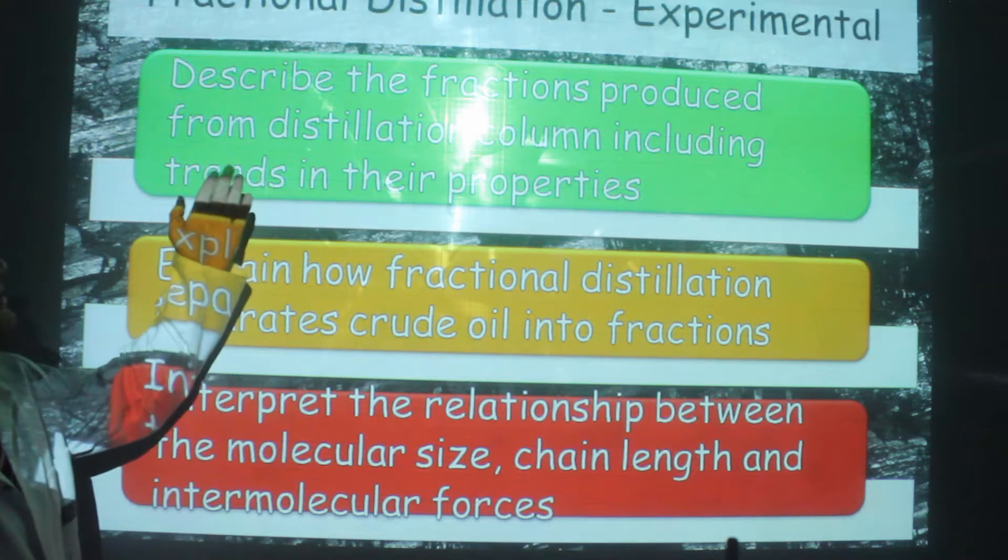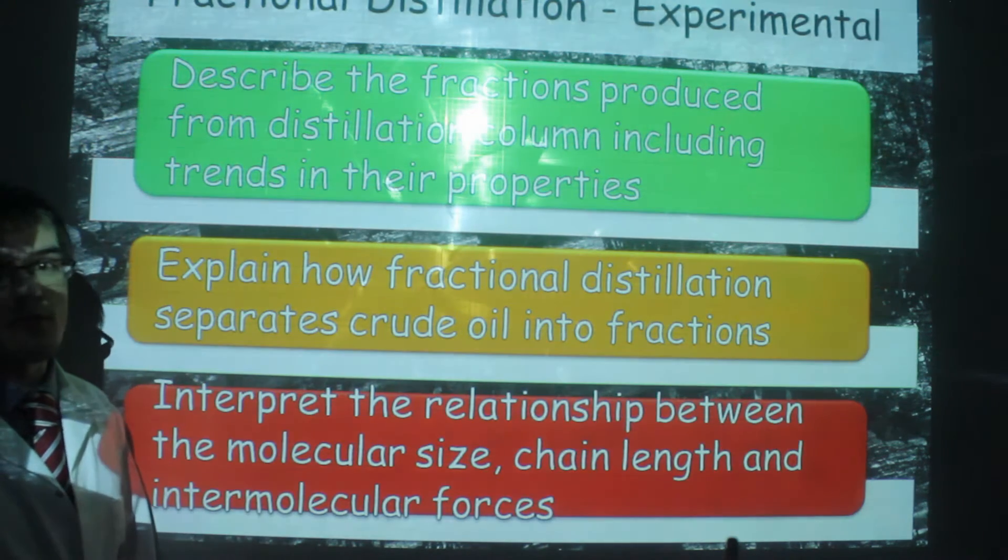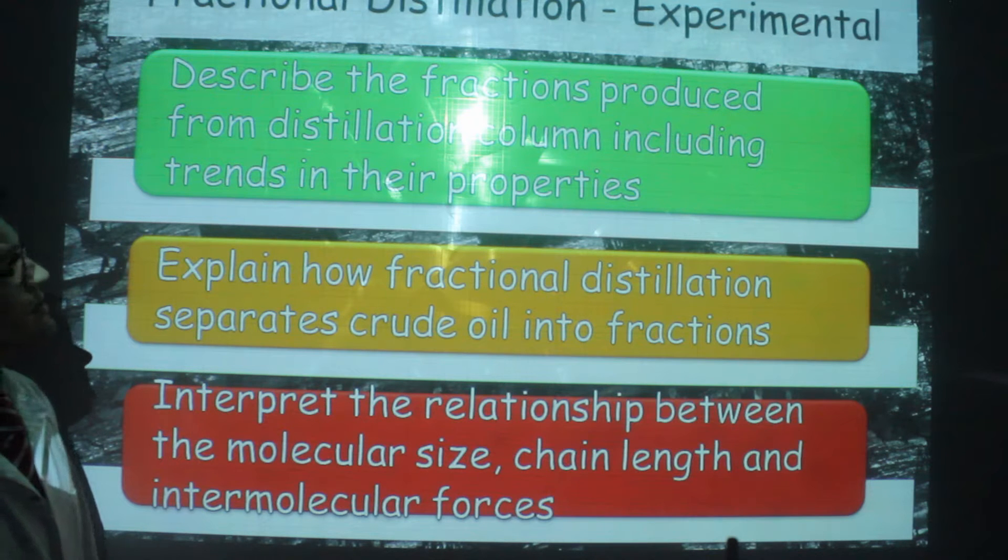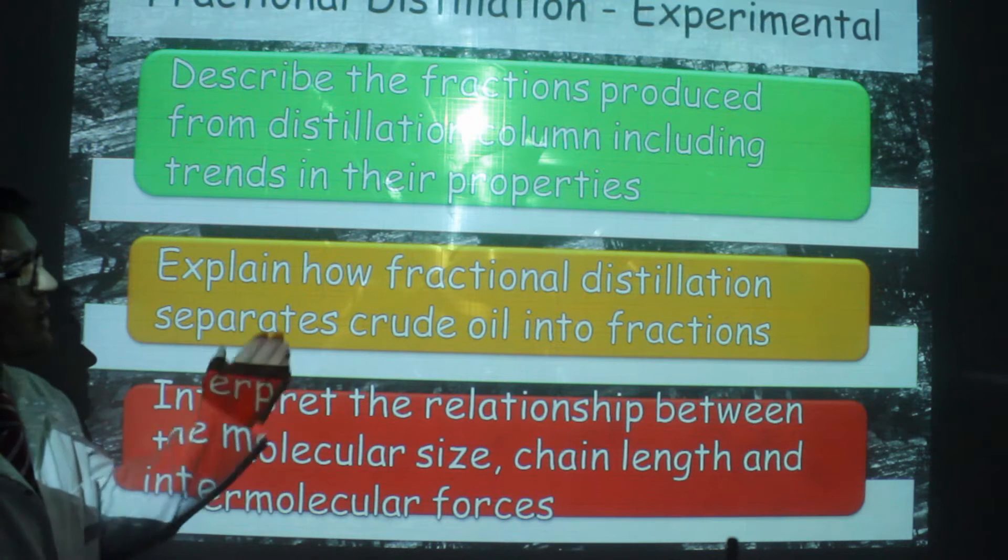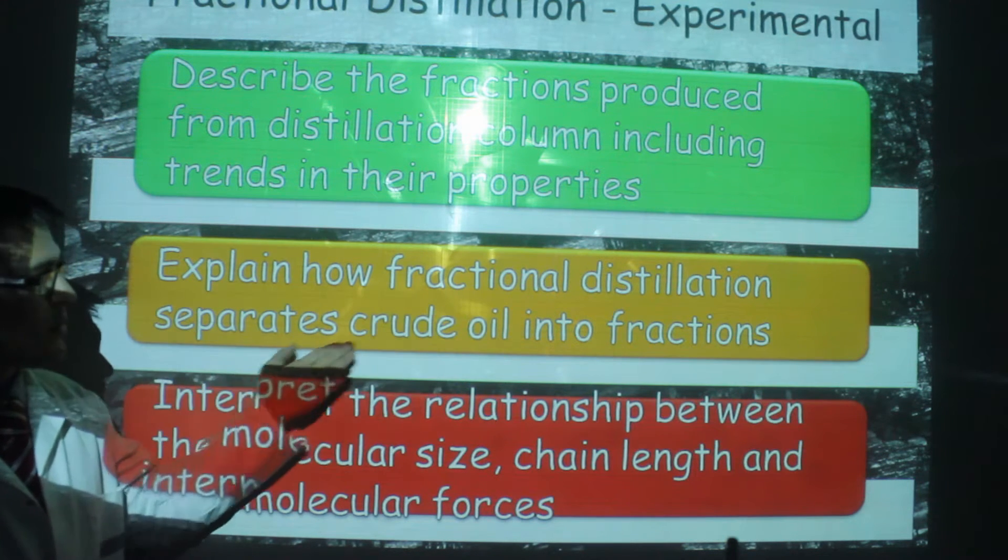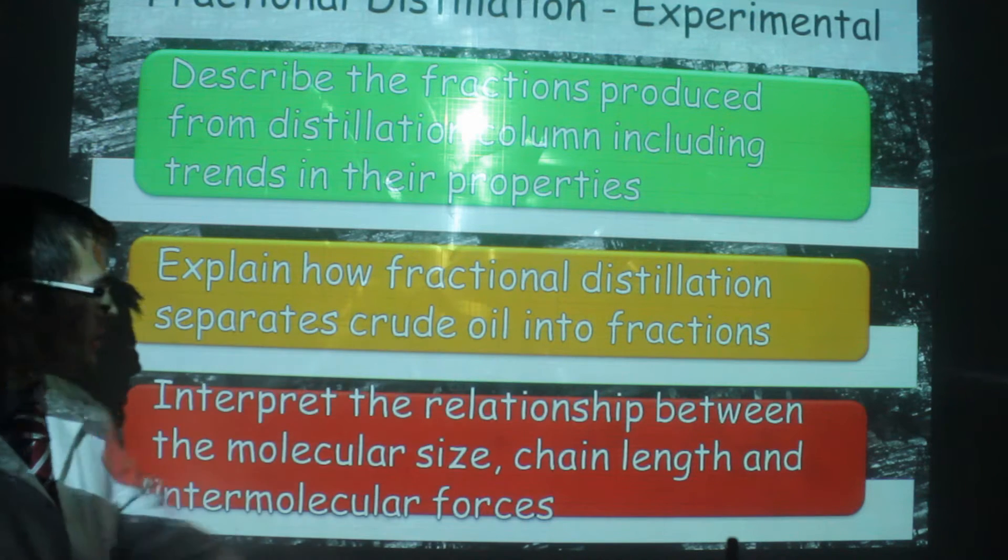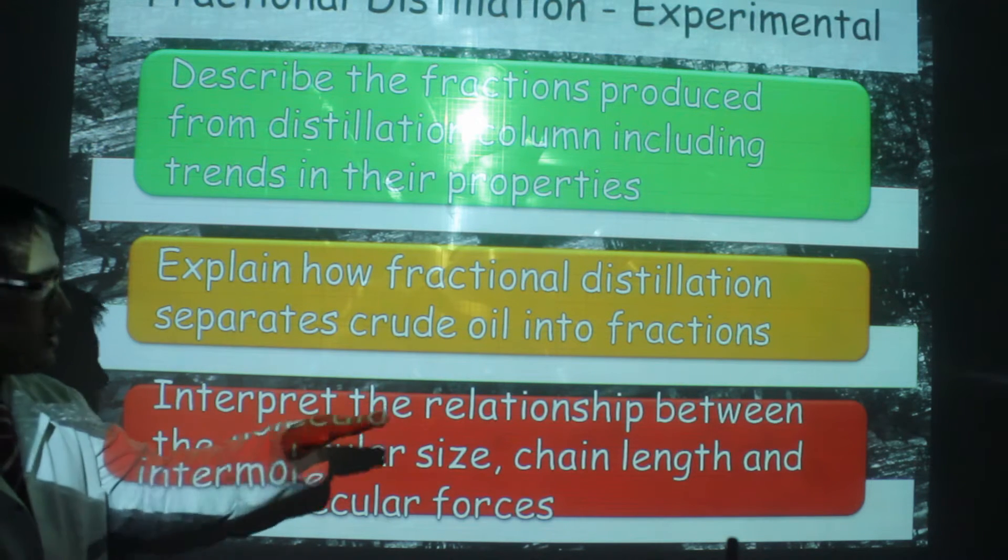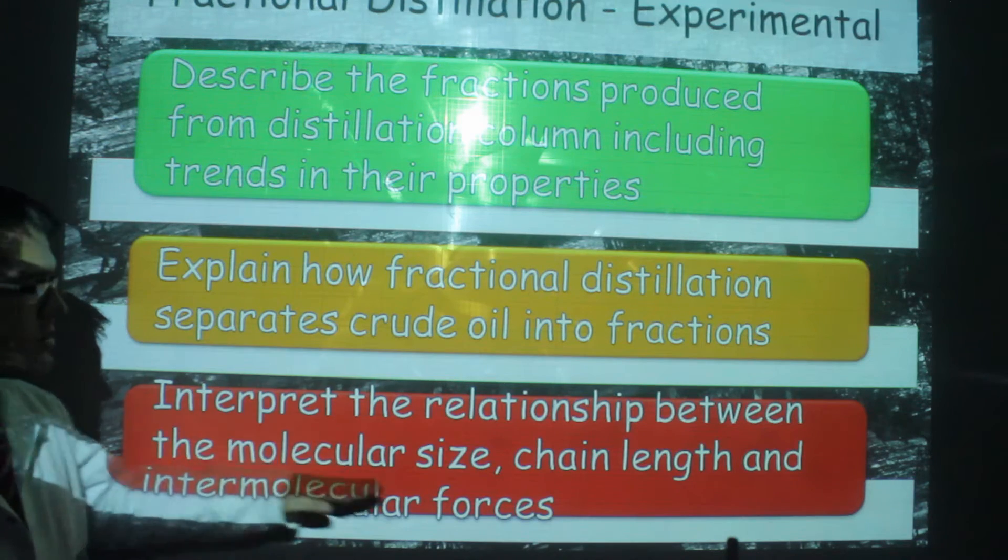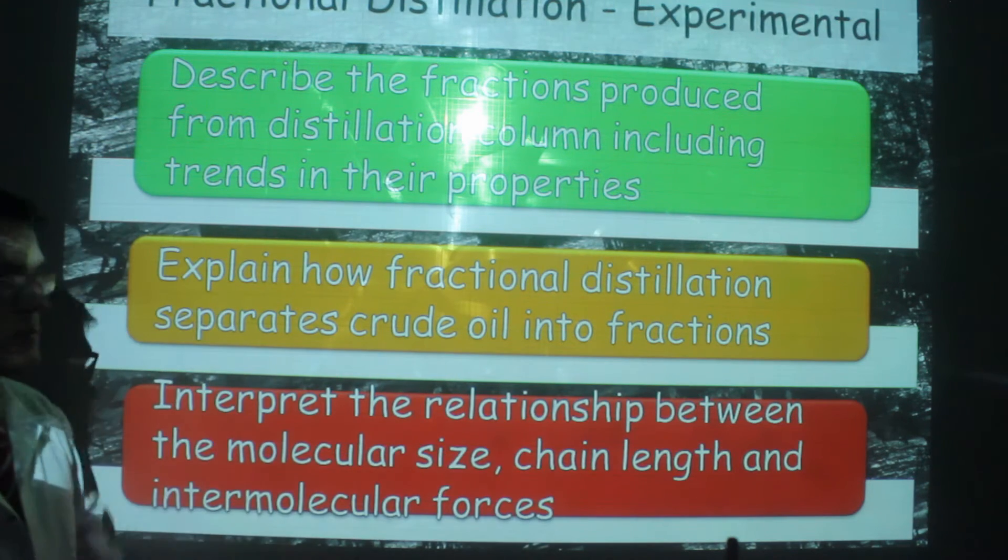The first objective is to describe how fractions are produced from a distillation column and identify trends in their properties, to explain how fractional distillation separates crude oil into fractions, and to interpret the relationship between the molecular size, chain length, and intermolecular forces.